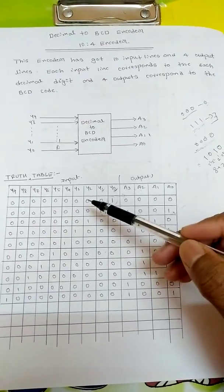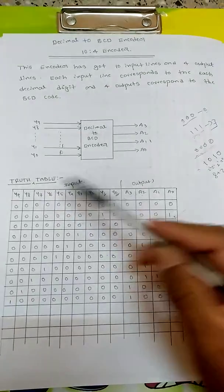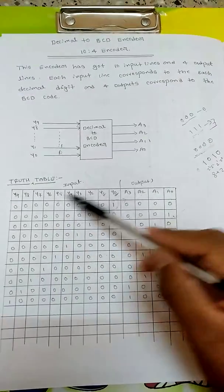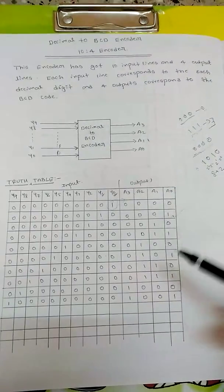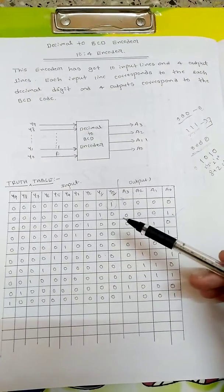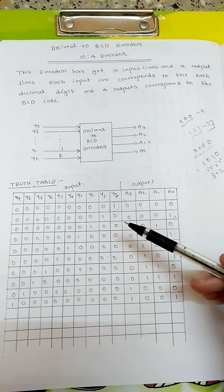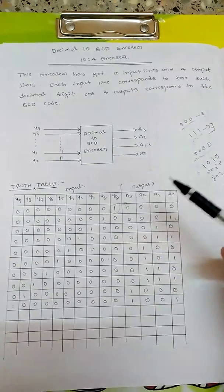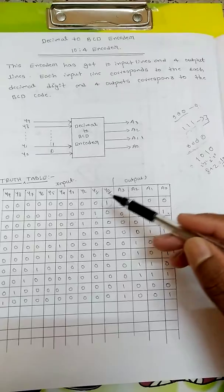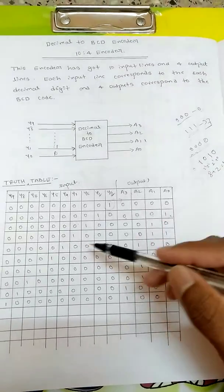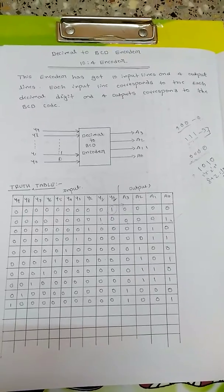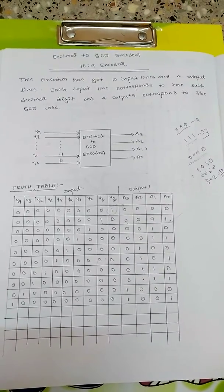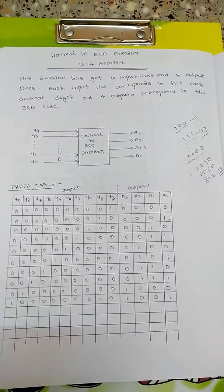It's simple. It has 10 inputs, y0 to y9, so these are the input lines and these are the 4 output lines. The condition is that at any time only one of its input will be active or active high. One of its input will be high and rest will be 0.